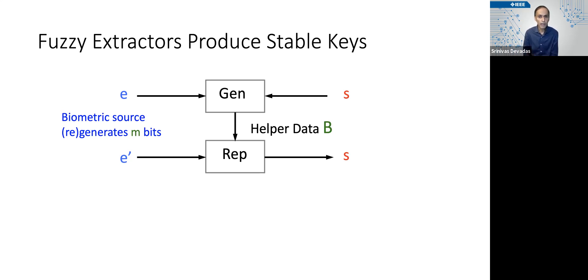The notion of fuzzy extractors allows us to do that from any biometric source, and in particular, we have the biometric source being an input to a generate function that is also going to encode a secret key, which is completely randomly selected, let's say, from a hardware random number generator, and e and s through the generate algorithm are going to produce helper data B.